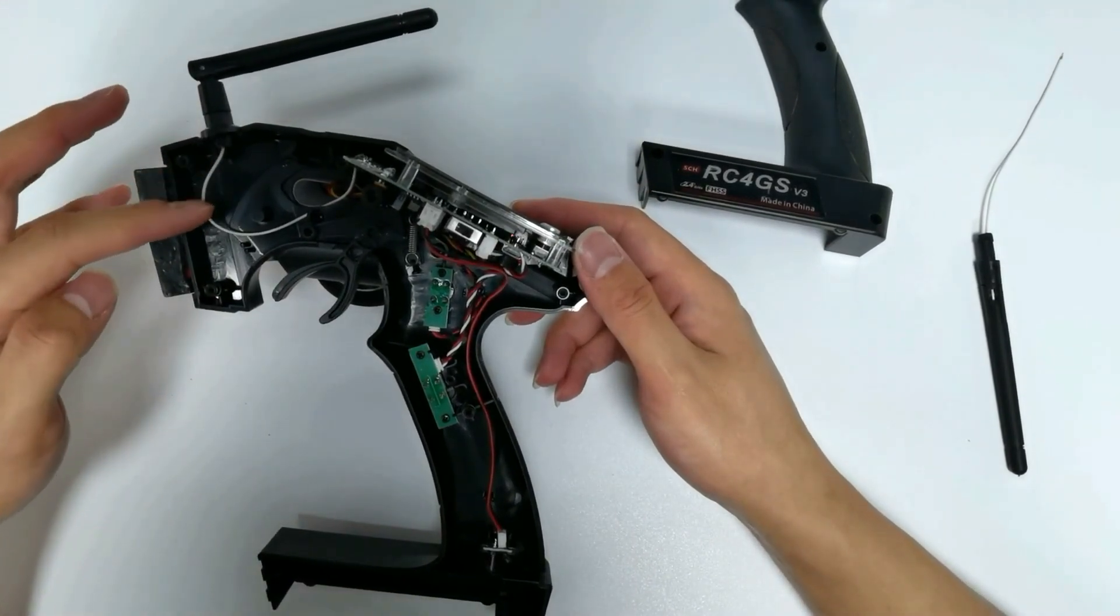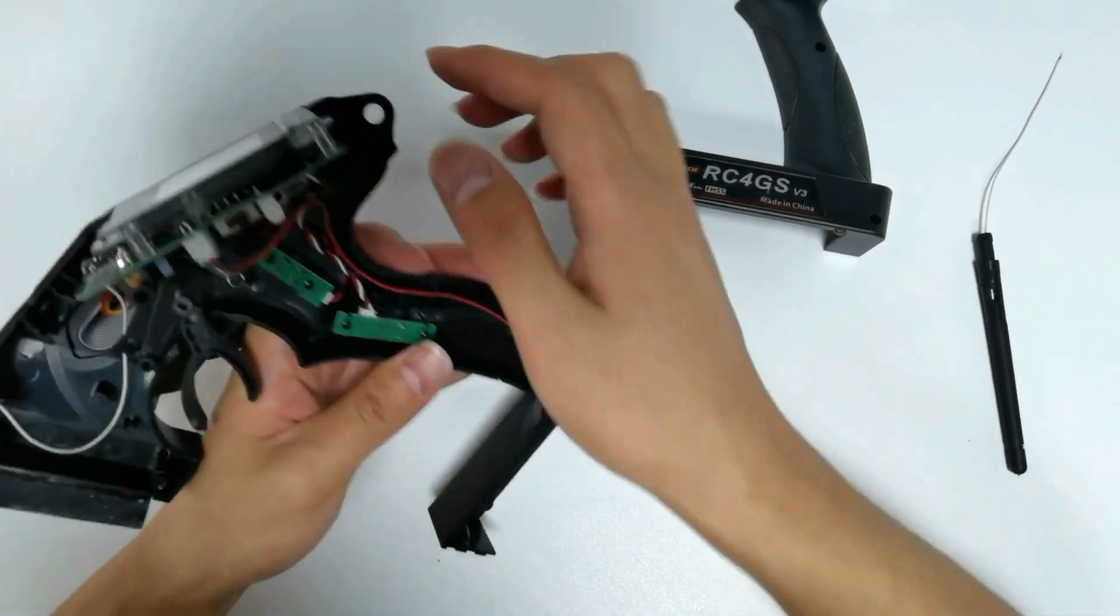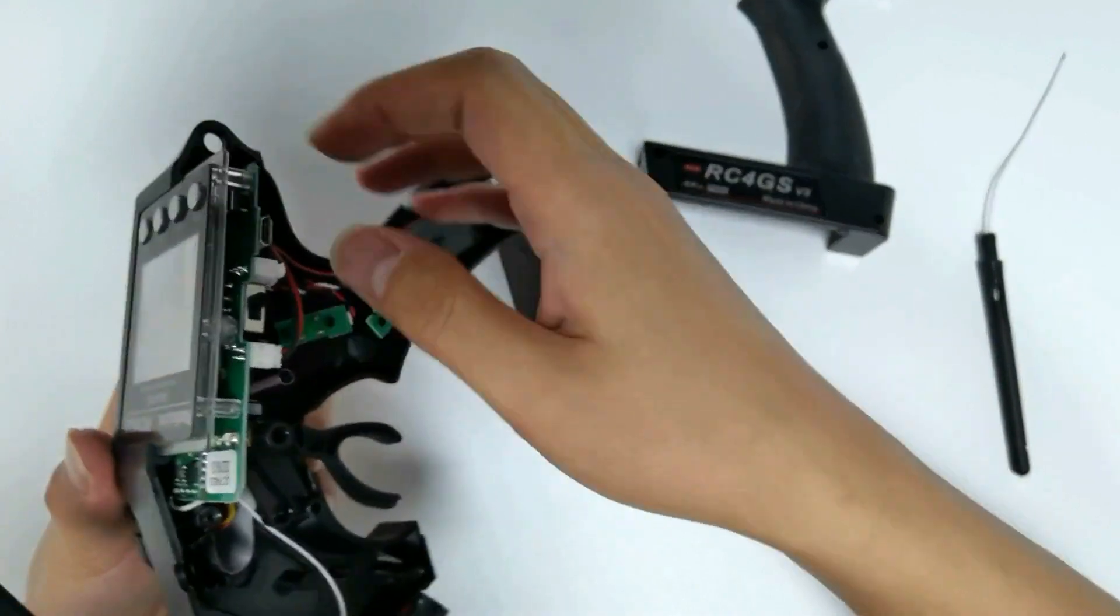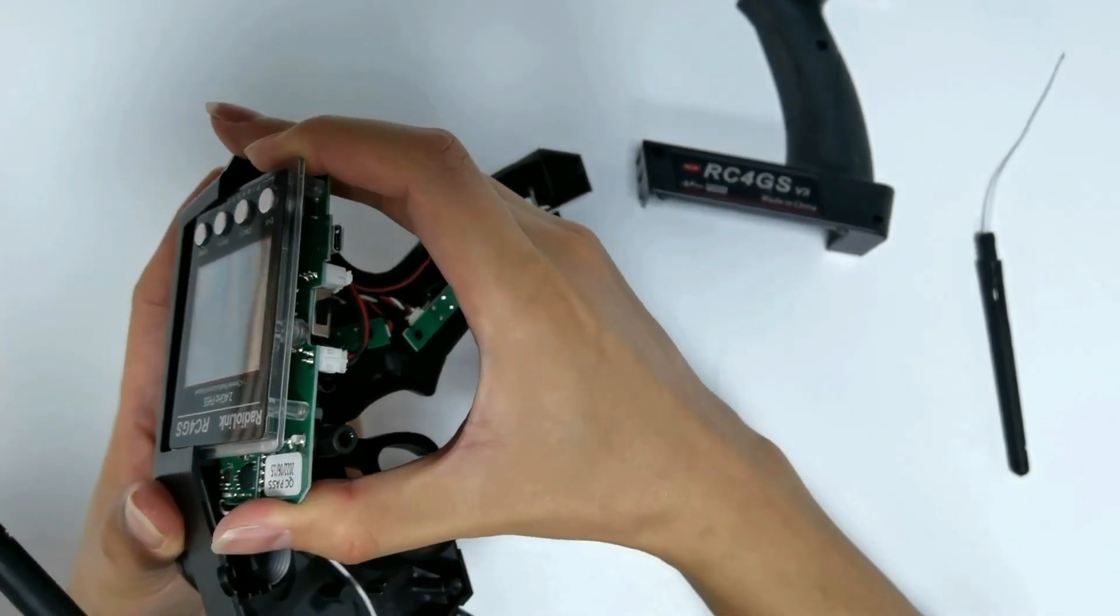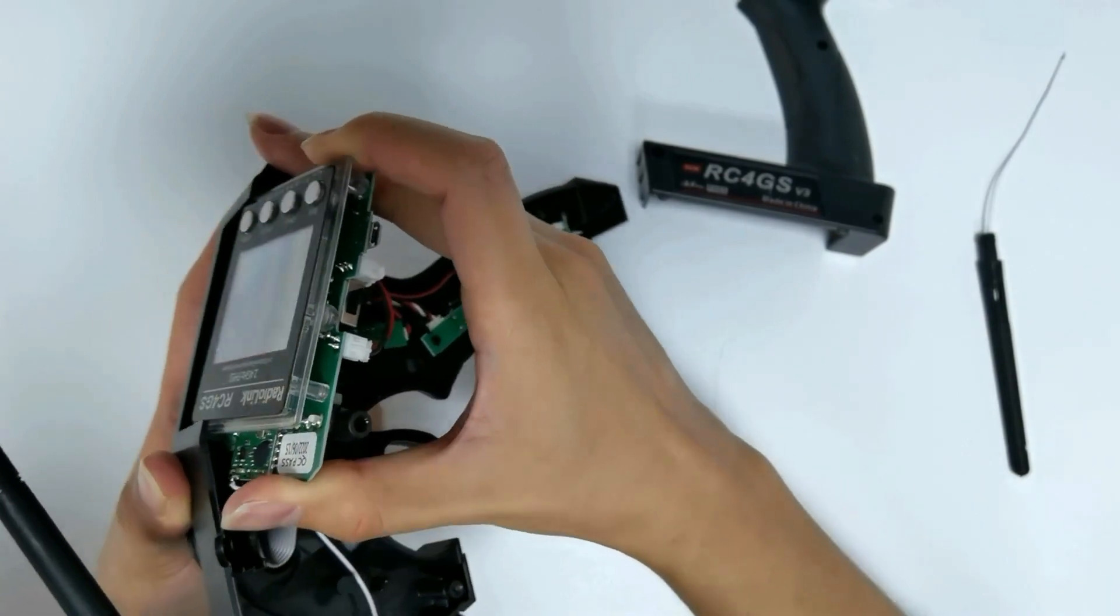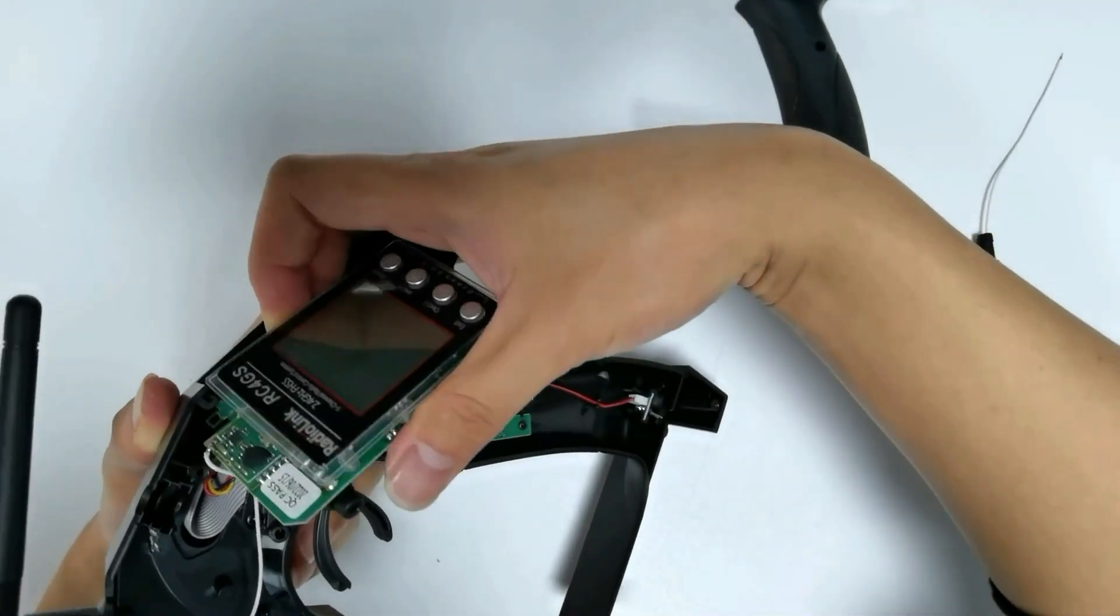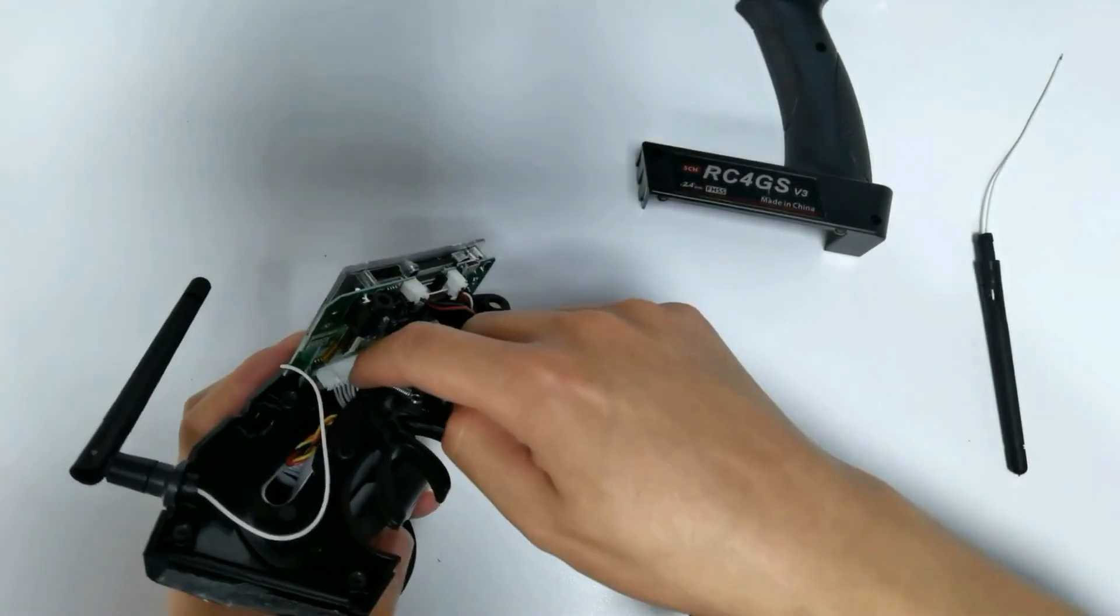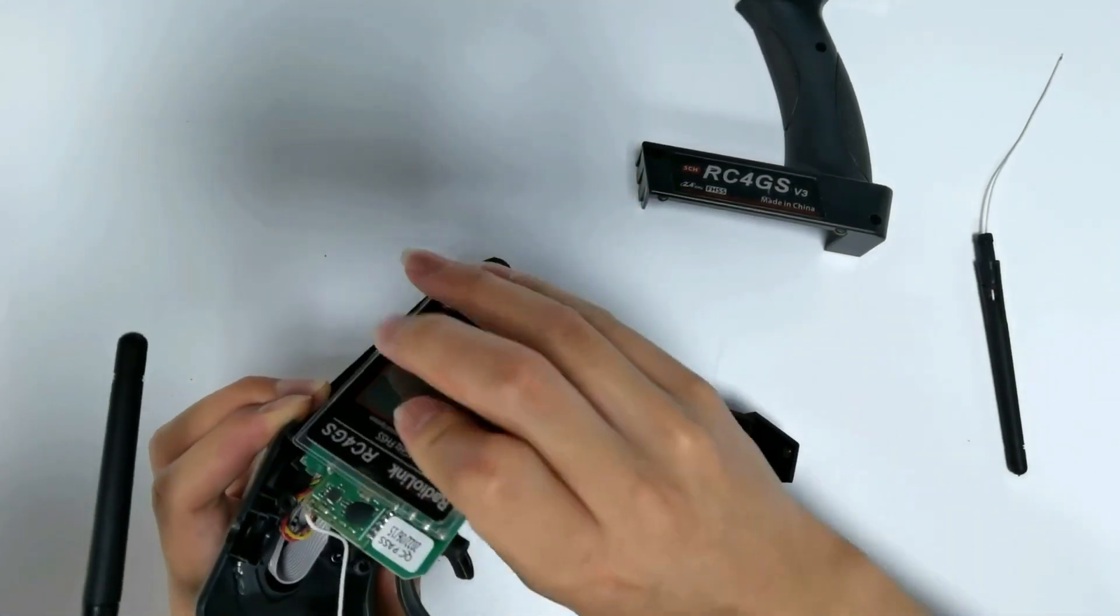We can see the antenna is connected to the board here. Slowly move the board outwards. There is a flat cable. You can unplug it or just keep it.